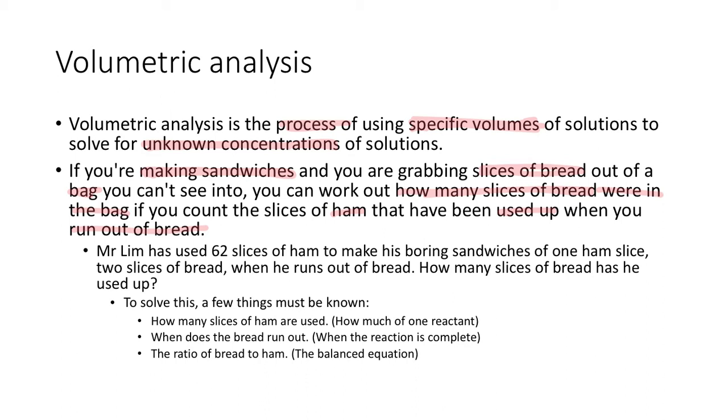Let's say if I use 62 slices of ham to make my boring sandwich of one ham slice and two slices of bread, when I run out of bread, how many slices of bread have been used up? It'd be double of 62, which would be 124. So to solve this, a few things must be known.